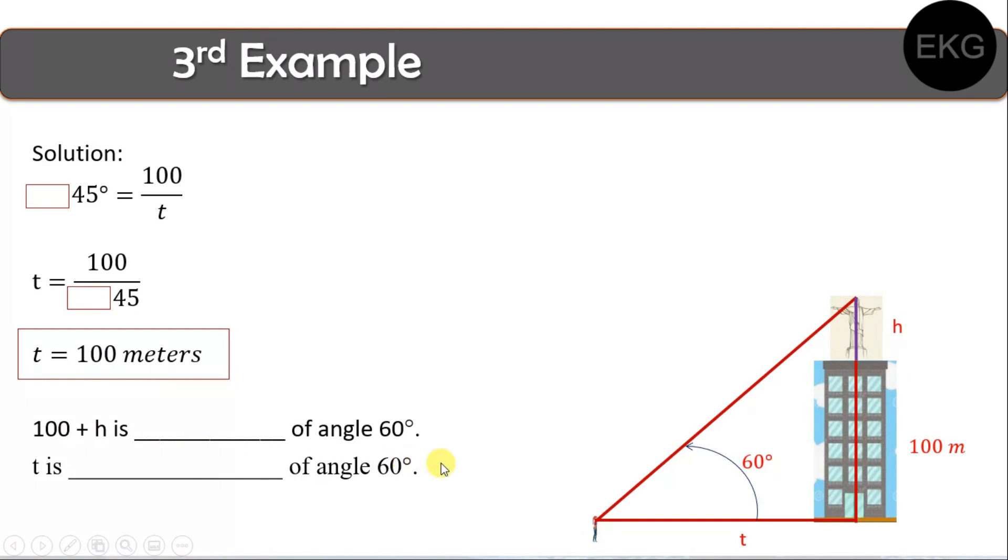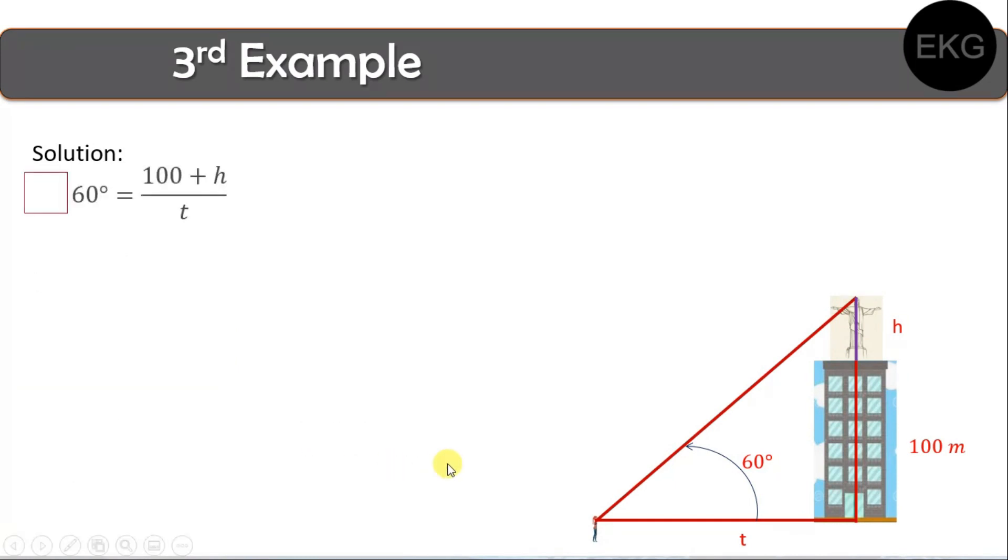And then, so for the solution, so, ano yung gagamitin natin na trigonometric function? Where in the numerator, we become 100 plus h, all over t. Yan, so, substitute natin yung nakuha natin ng value ng t, na 100, kanina. Then we cross multiply, yung 100 dito sa kabila.